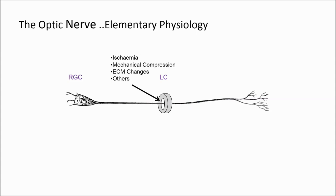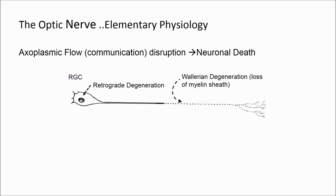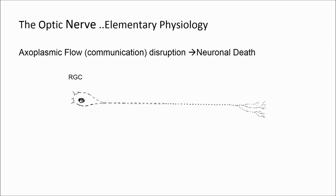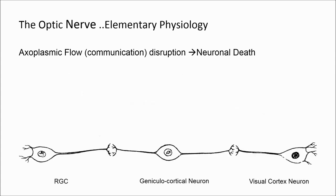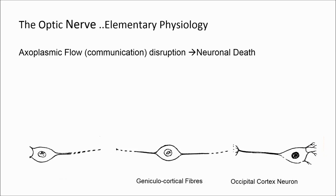Note that axonal damage in glaucoma takes place at the lamina cribrosa. However, the same changes will occur if the retinoganglionic cell axon is damaged anywhere along its entire path to the lateral geniculate nucleus. The damage involves both ends of the retinoganglionic cell, leading to slow degradation of the soma with chromatolysis, followed by loss of the entire neuron. Interruption of synaptic communication down the visual pathway will eventually lead to similar degenerative changes in the visual cortex neurons.